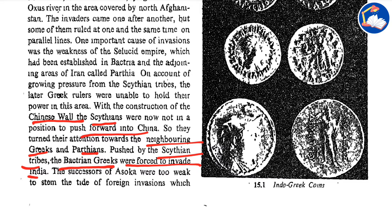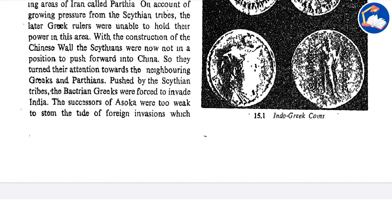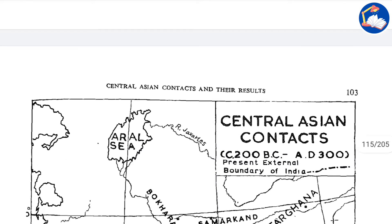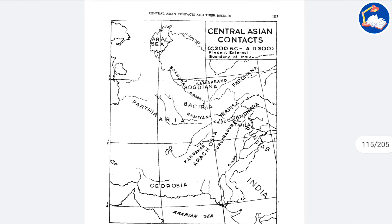The creation of the Great Wall of China forced particular tribal groups such as the Scythians to march and attack the Greeks and the Parthians, so they had to naturally invade India. The successors of Ashoka were too weak to stem the tide of foreign invasions.